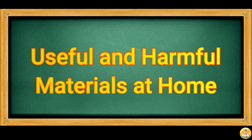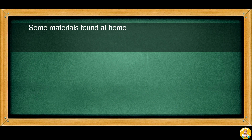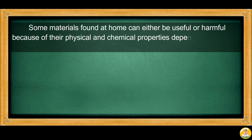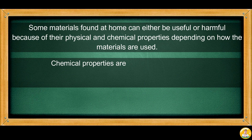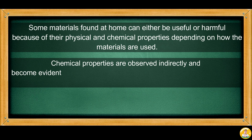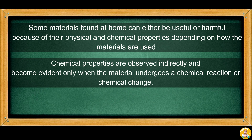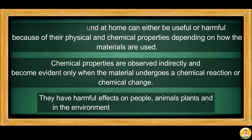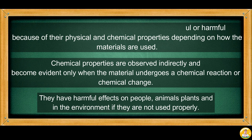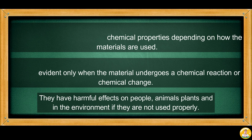Let's come now to the useful and harmful materials at home. Some materials found at home can either be useful or harmful because of their physical and chemical properties, depending on how the materials are used. Chemical properties are observed indirectly and become evident only when the material undergoes a chemical reaction or chemical change. They have harmful effects on people, animals, plants, and the environment if they are not used properly.